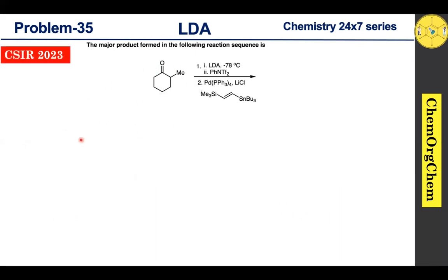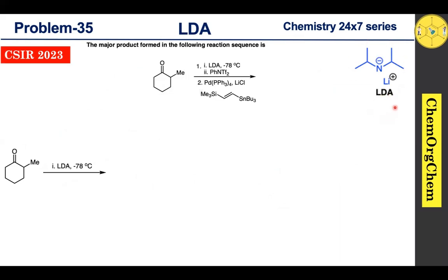Let's look at the first reaction condition, which involves the use of LDA. LDA is a non-nucleophilic, sterically hindered strong base which generally takes the proton from the less hindered acidic site. Looking at our substrate, this site is an acidic site and this site is also an acidic site. However, this site is the most sterically accessible. Therefore, LDA readily takes the proton from here to produce the corresponding kinetic enolate ion.